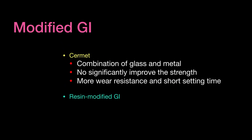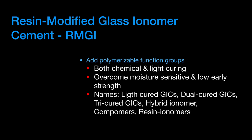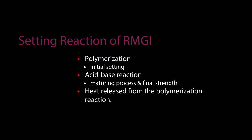Modifications of glass ionomer cement: when mixed with silver particles of amalgam, it is known as cermet — a combination of glass and metal — showing no significant improvement in strength but more wear resistance and shorter setting time. Resin-modified glass ionomer cement is a mixture of glass ionomer and composite, with greater concentration of glass ionomer. Both chemical and light-cure systems are available. It overcomes moisture sensitivity and low early strength. Types include light-cured GICs, dual-cured GICs, tri-cured GICs, hybrid ionomers, compomers, and resin ionomers. The setting reaction involves initial polymerization, then an acid-base reaction.